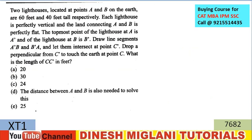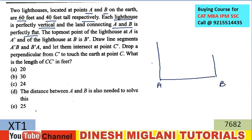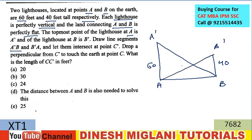Let's take the next problem. Two lighthouses located at points A and B on flat land are 60 feet and 40 feet tall respectively. The topmost points are A' and B'. Draw line segment A'B and line segment B'A — these lines intersect at point C'. Draw a perpendicular from C' to the ground at point C. The question is to find the height C to C'.